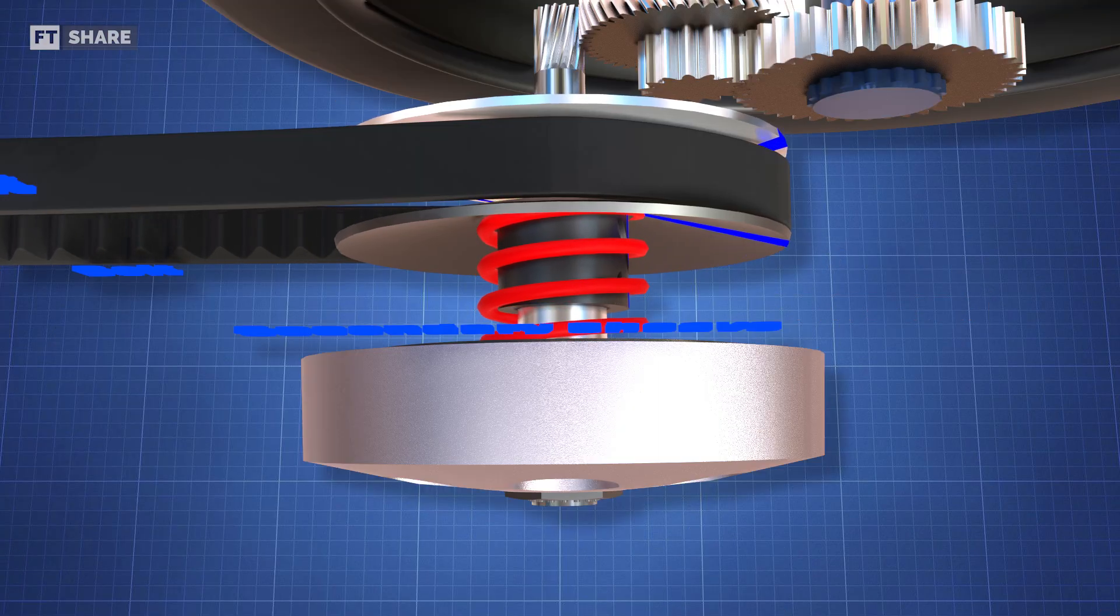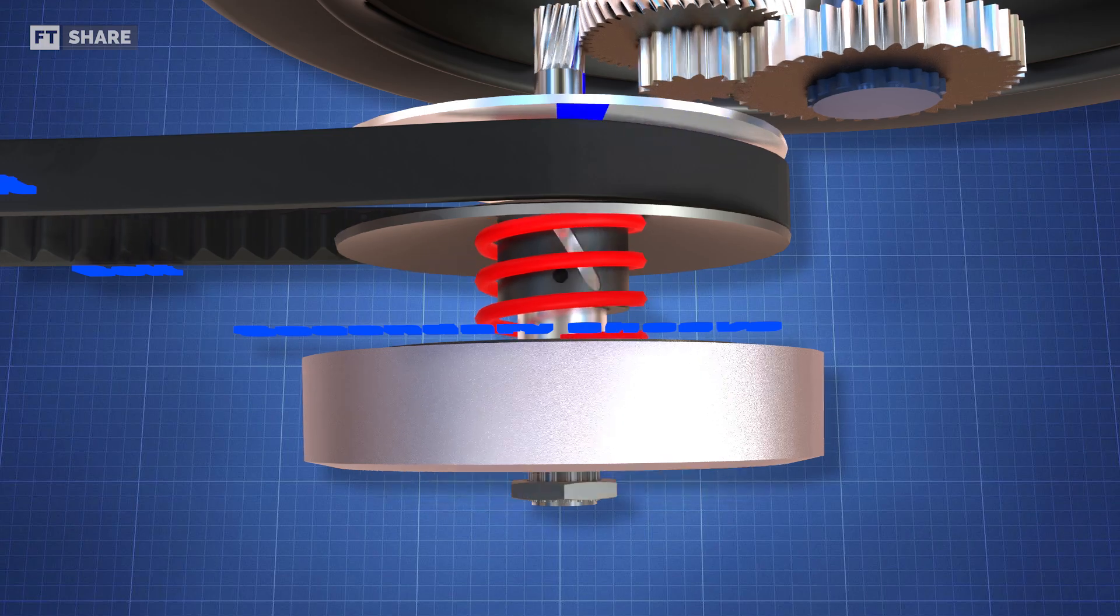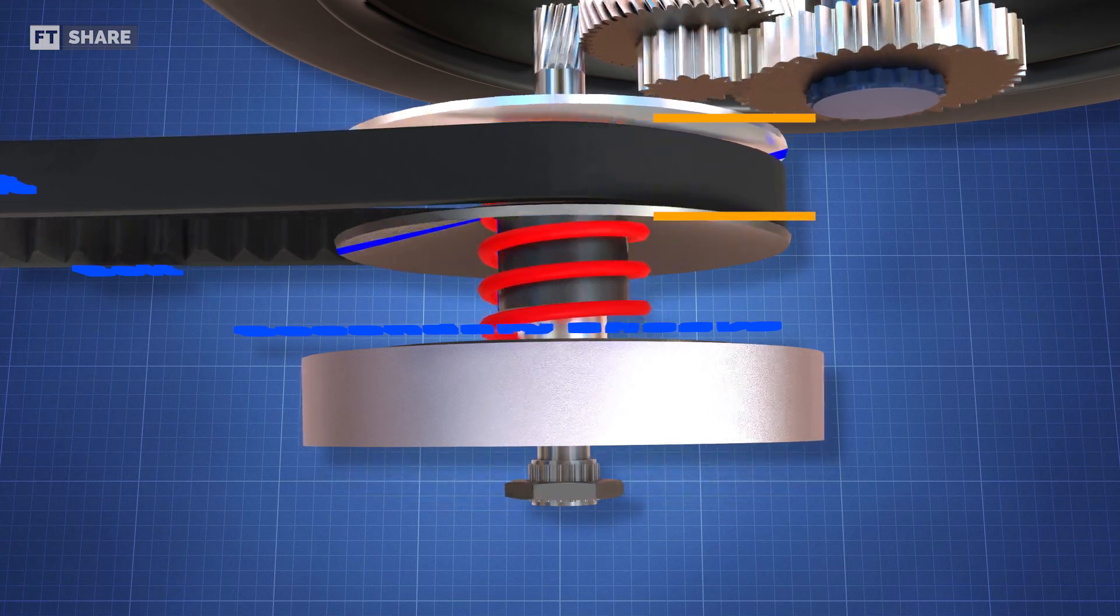When the engine is at low RPM, the pressure of the spring on the secondary pulley will keep the rollers in the center of the pulley.